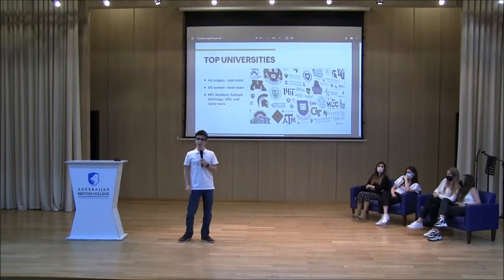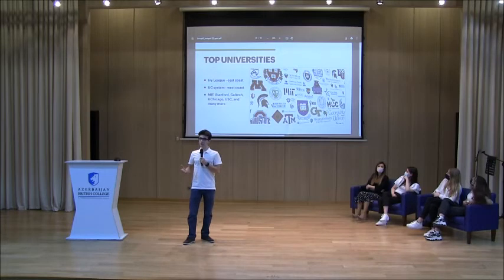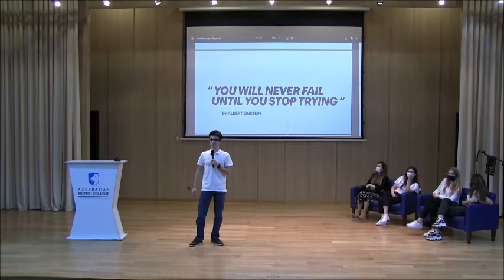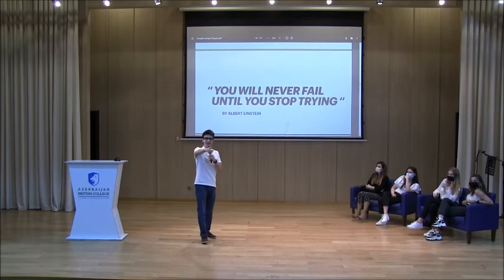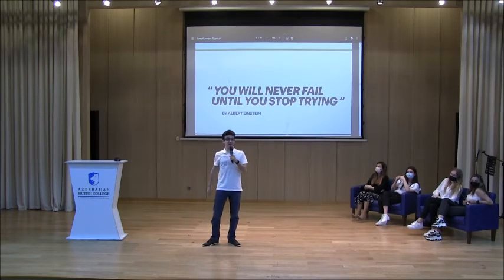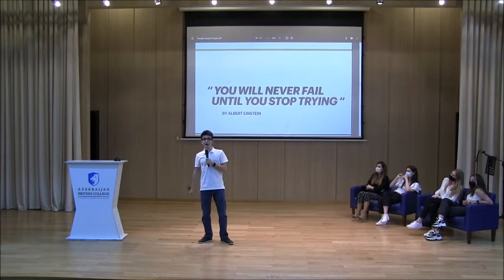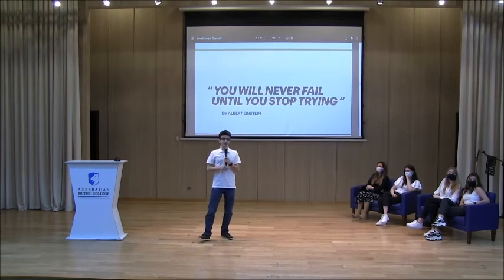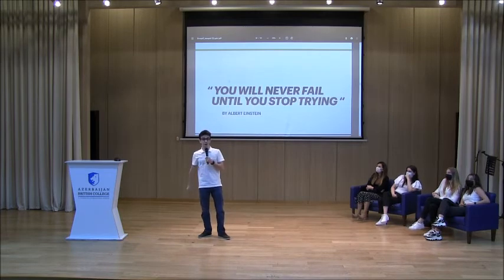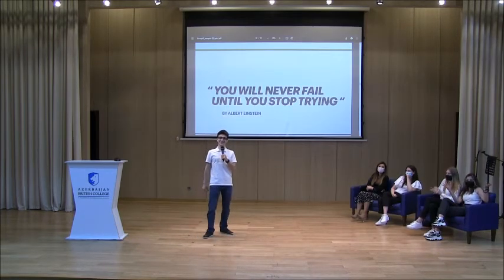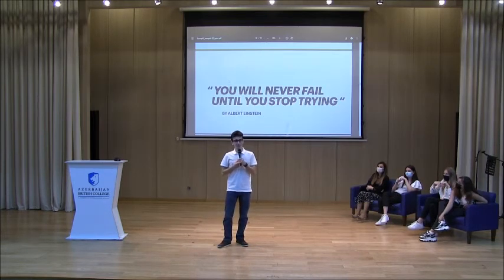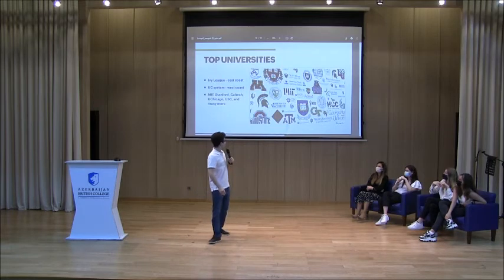Let's start with a show of hands: how many of you have tried doing something today? How many have looked into universities? How many have decided what they want to major in? I didn't know until around a month before the deadline. Now, moving on to top universities in the United States — these include the Ivy League's eight members, the UC system with ten universities, and others like MIT, Stanford, Caltech, and many more.